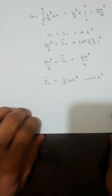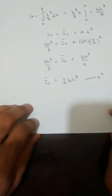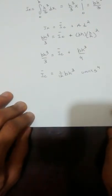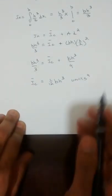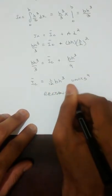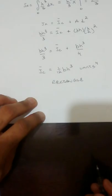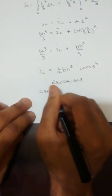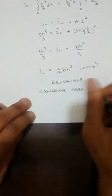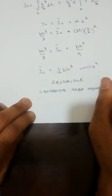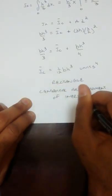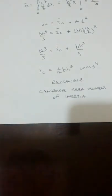The units of the area moment of inertia will be units to the fourth power. This is the centroidal area moment of inertia of a rectangle, equal to (1/12) b h cubed. Thank you.